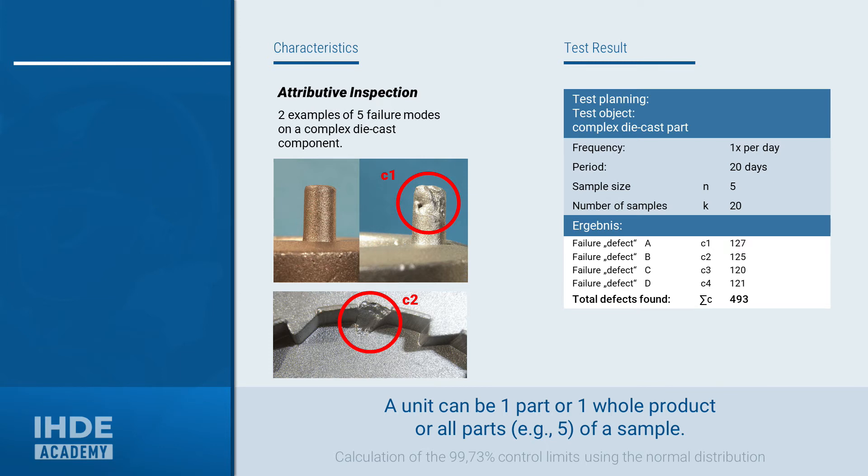The table on the right contains some information from the test planning and the test results. A random sample of five pieces was taken every day. This was continued for a total of 20 days. The parts were checked and the following defects were found. Defect image C1 was found a total of 127 times. Defect C2 125 times. The defects C3 and C4 total 120 and 121 times. Thus, a total of 493 defects were found.